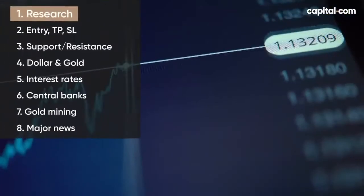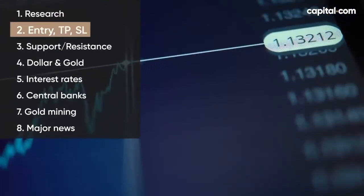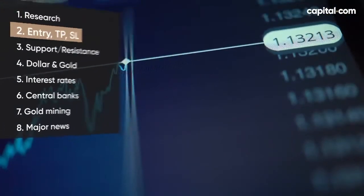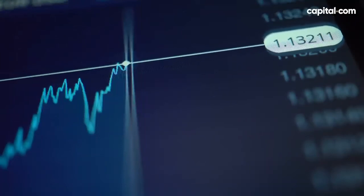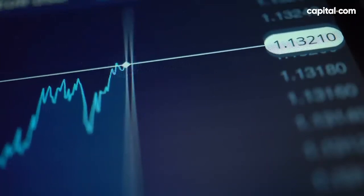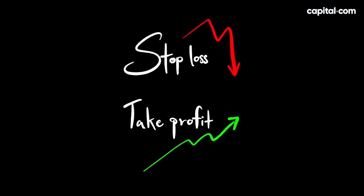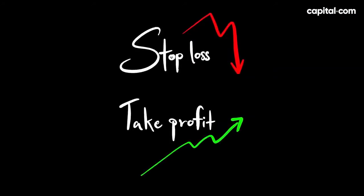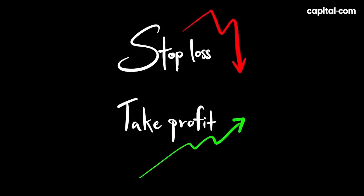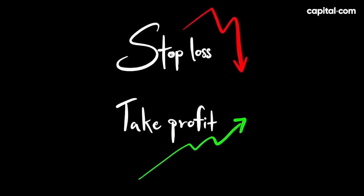The second part of planning the trade is determining the three different price levels for the trade. Number one is finding the price at which you're willing to open the position. Number two is the level at which you're thinking of taking profits. And number three is a level to set your stop losses. Always have these set in advance to manage the risk of your trade.